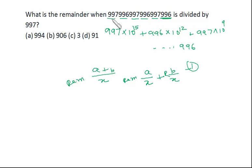997 into 10 raised to power 15, if I divide by 997, the remainder will be 0. So from here I'll be getting the remainder is 0. Now this is 996 into 10 raised to power 12, or what I can see is 996 into 1000 raised to 4.